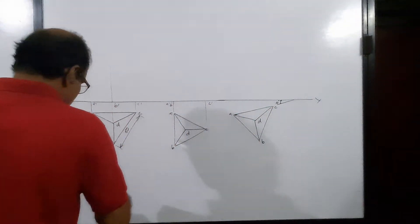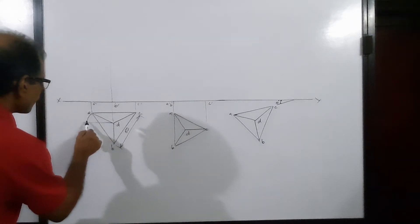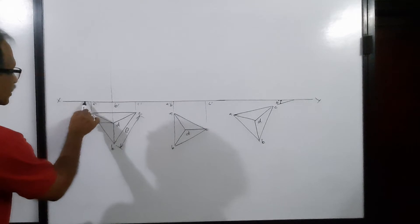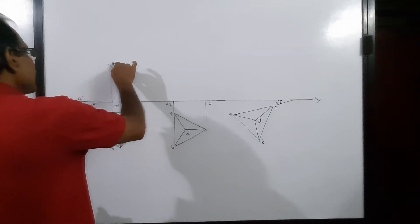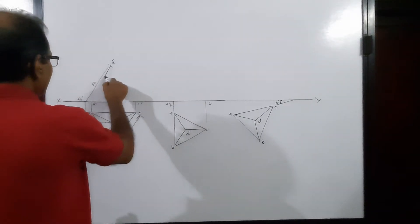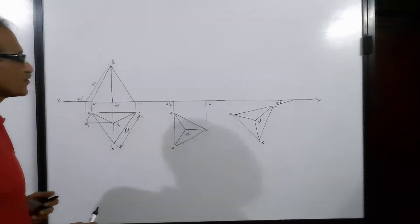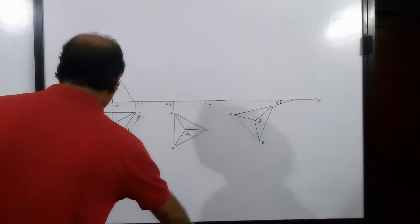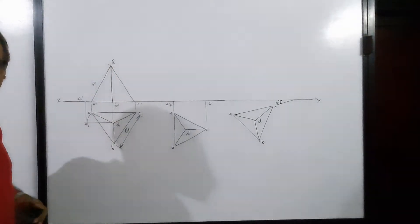To locate D dash: since the true length of DA is 60, make DA parallel to XY. Draw a horizontal line through D; with D as center and DA as radius, cut an arc to get A1. Project A1 to the XY line to get A1 dash. Since A1 dash to D dash is 60, take 60 in your compass and cut an arc to get D dash. This distance is 60. D dash, A dash; D dash, B dash; D dash, C dash — this is the elevation of the tetrahedron.